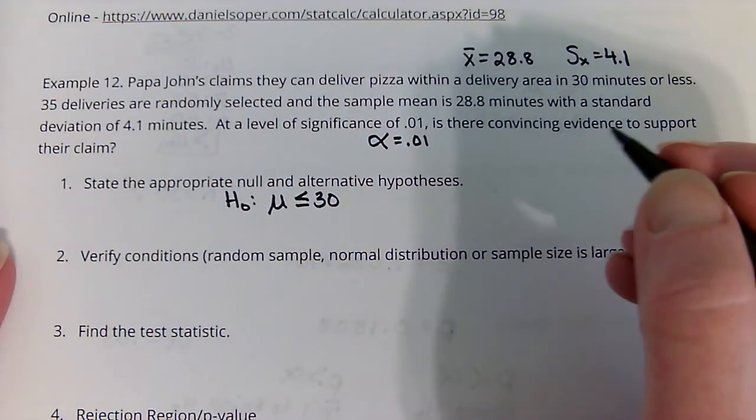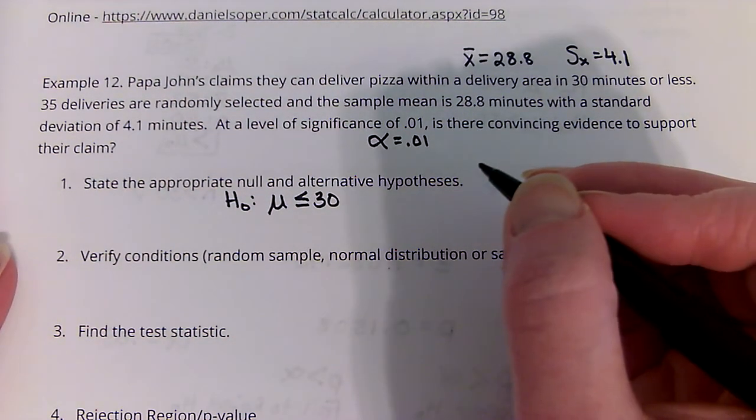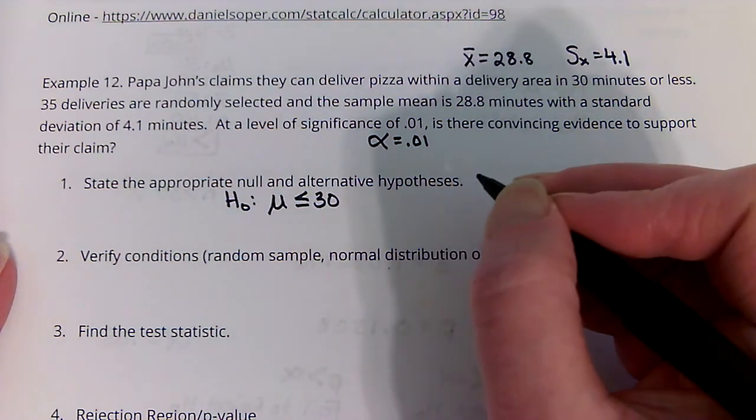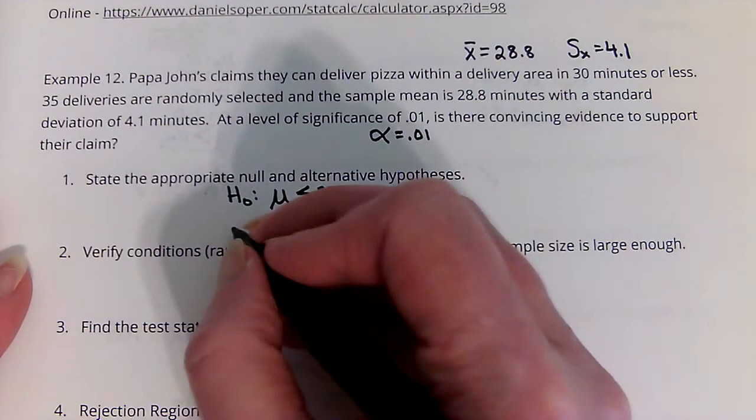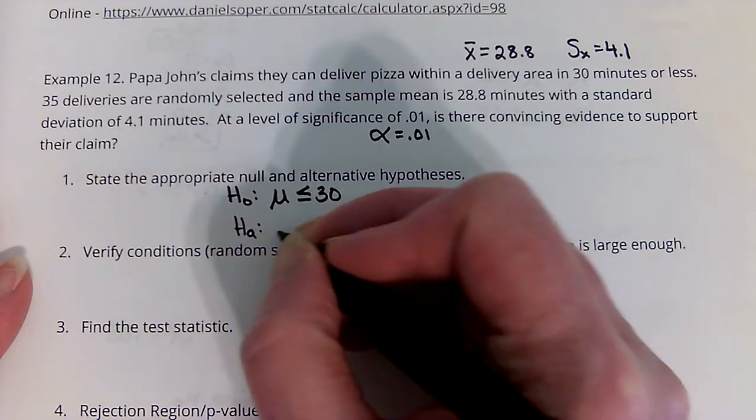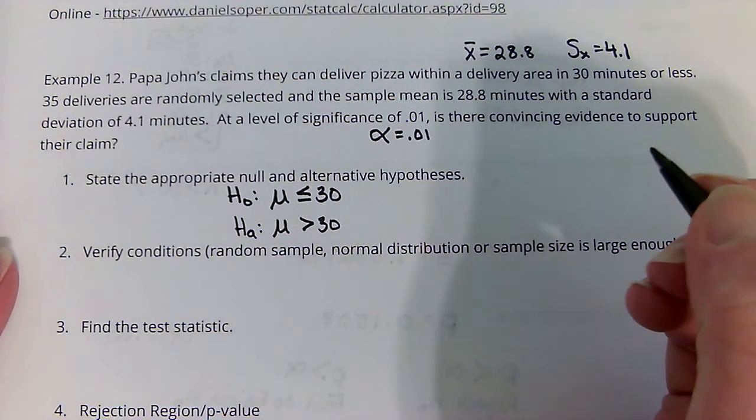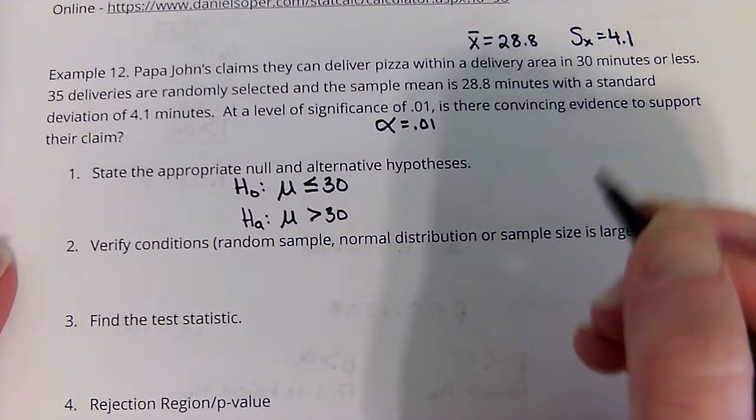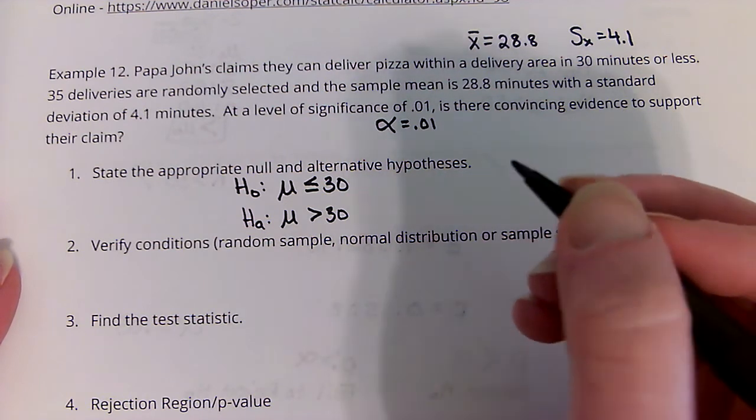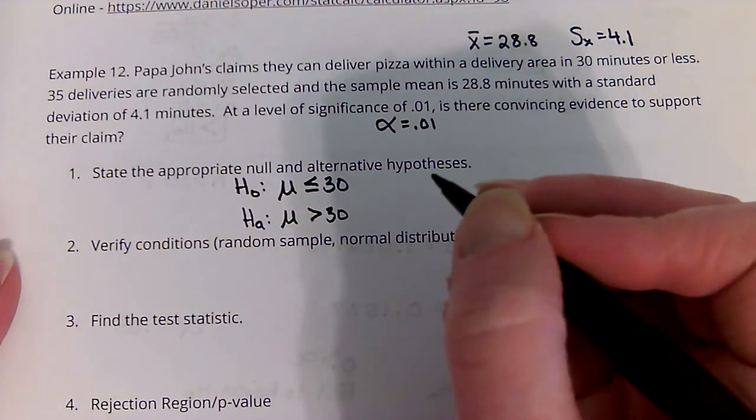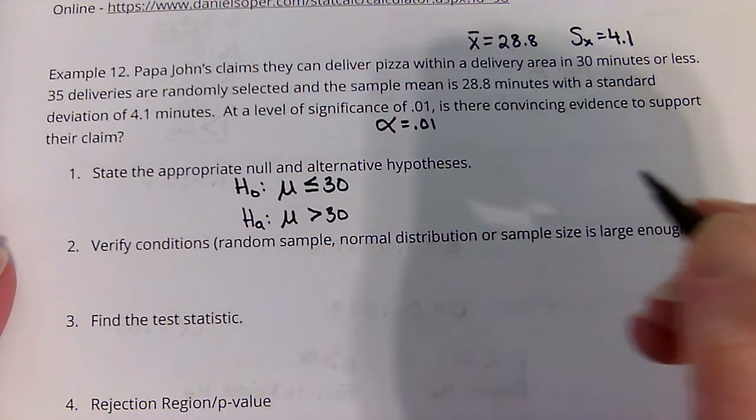This one's kind of interesting, because the claim is actually the null, because that's what they've said all along. The alternative, in this case, would be that it's taking longer than that. So in this case, we're actually seeing if their claim is right or not, and that is what their status quo has been.